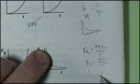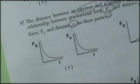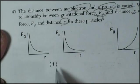So it's 1 over 2 squared, or a fourth. 1 over 3 squared, or a ninth. We've got the exact same graph for electrostatic force, so we're looking for choice 1 that's going to be the correct answer.